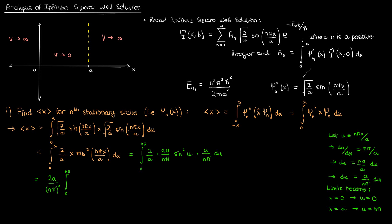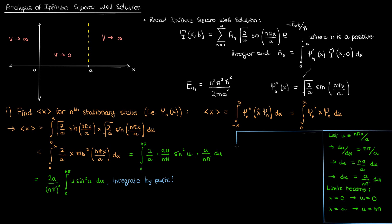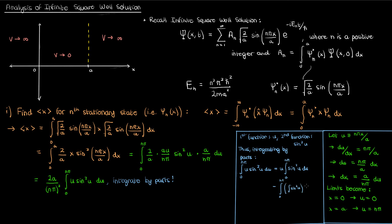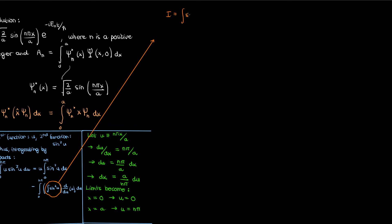Combining and simplifying gives us an integral we'll evaluate using integration by parts. We'll make u the first function and sine squared the second function and integrate. The integral becomes the first function times the integral of the second, minus the integral of that second function's integral times the derivative of the first. The roadblock is finding the integral of sine squared, which we'll compute on the side using integration by parts again.